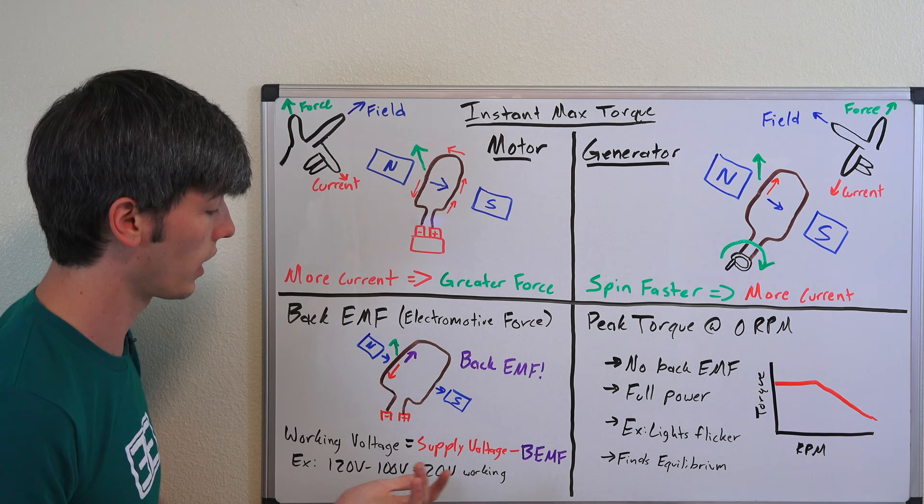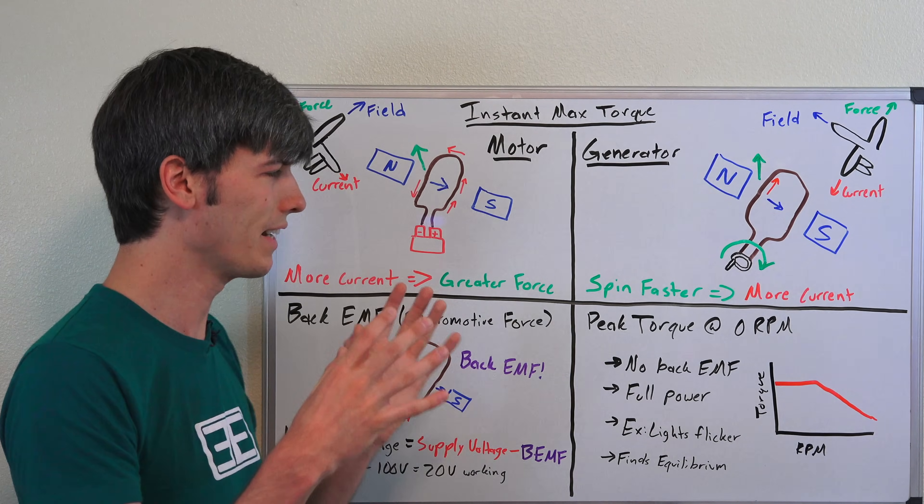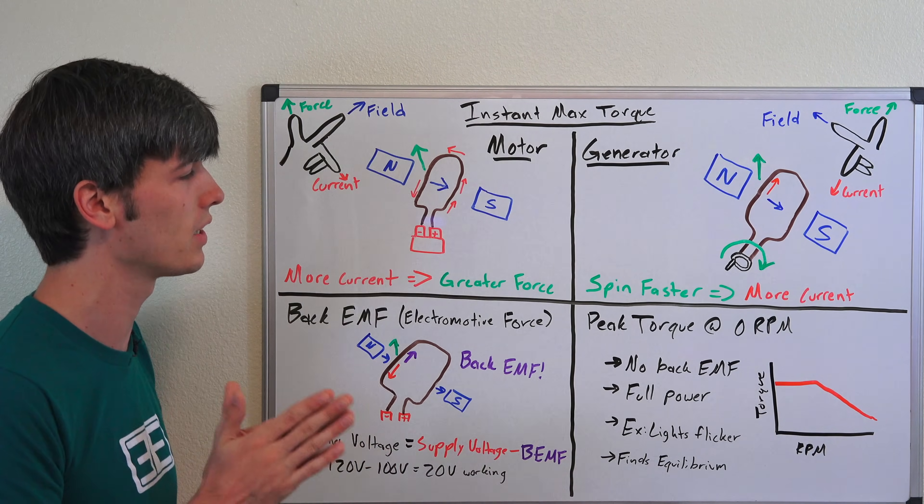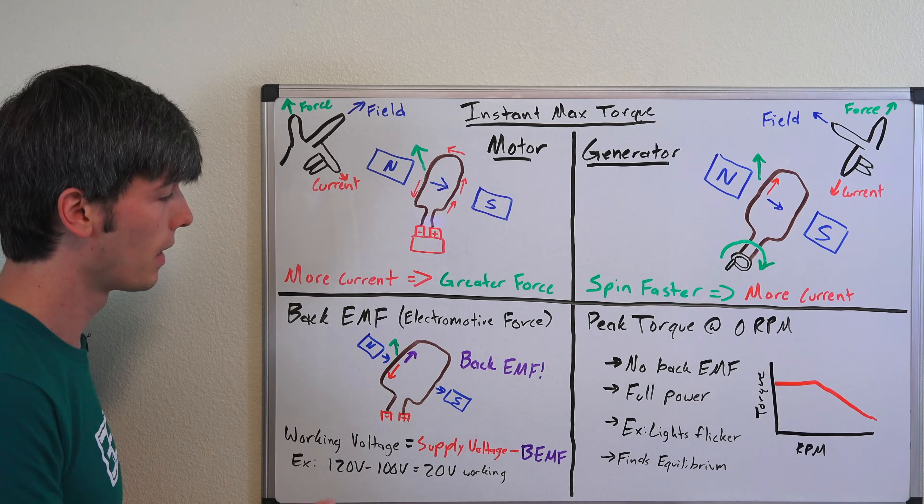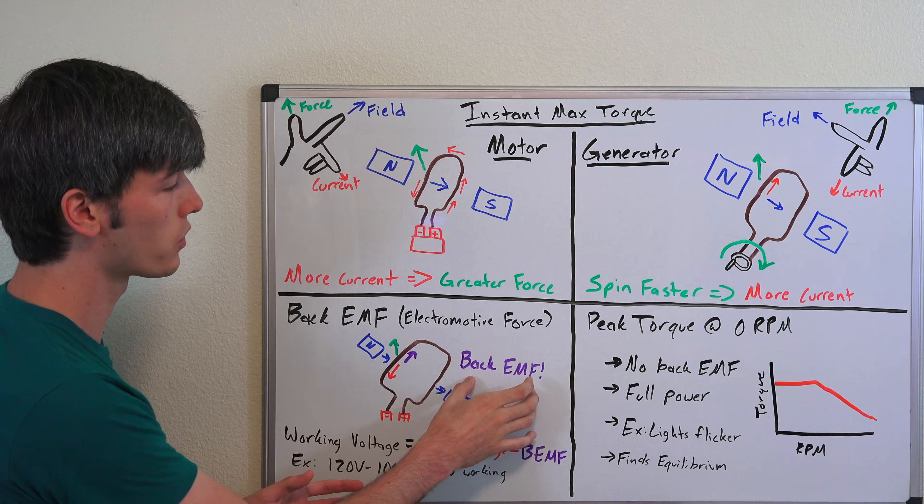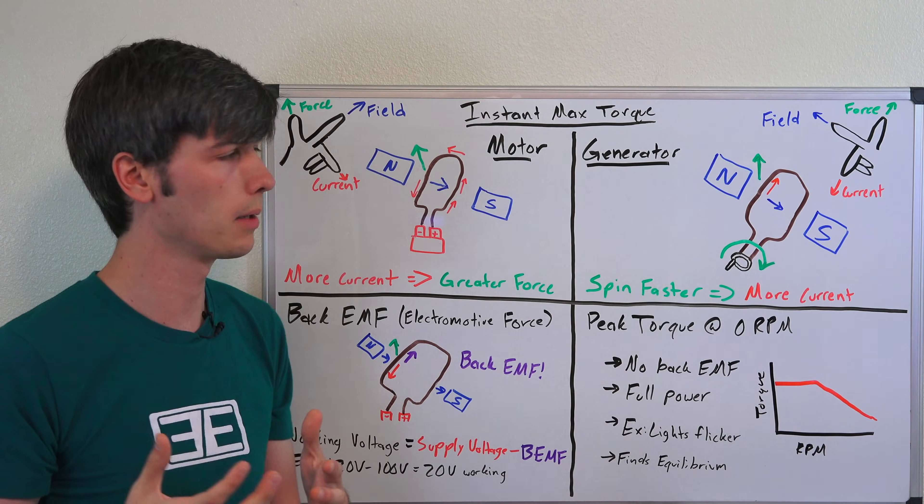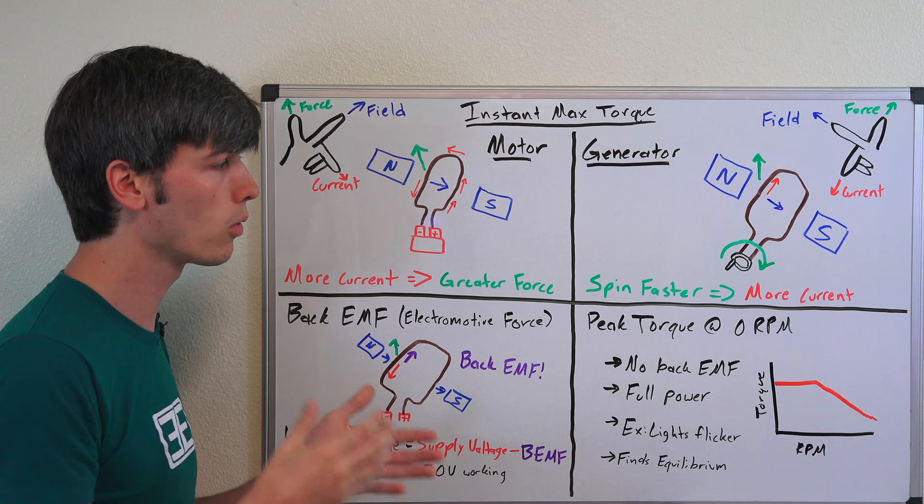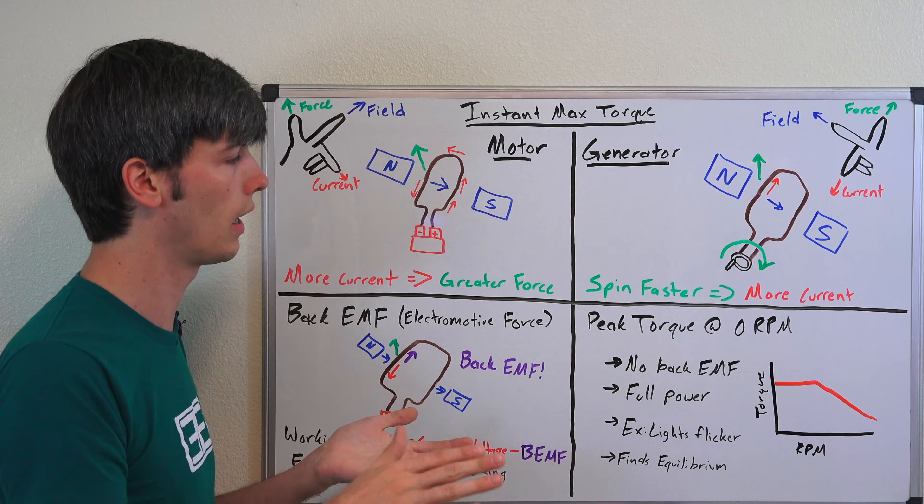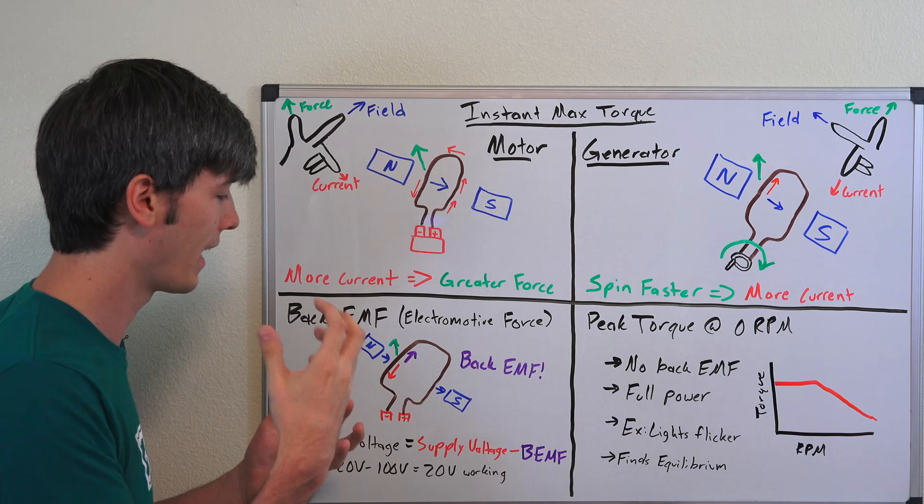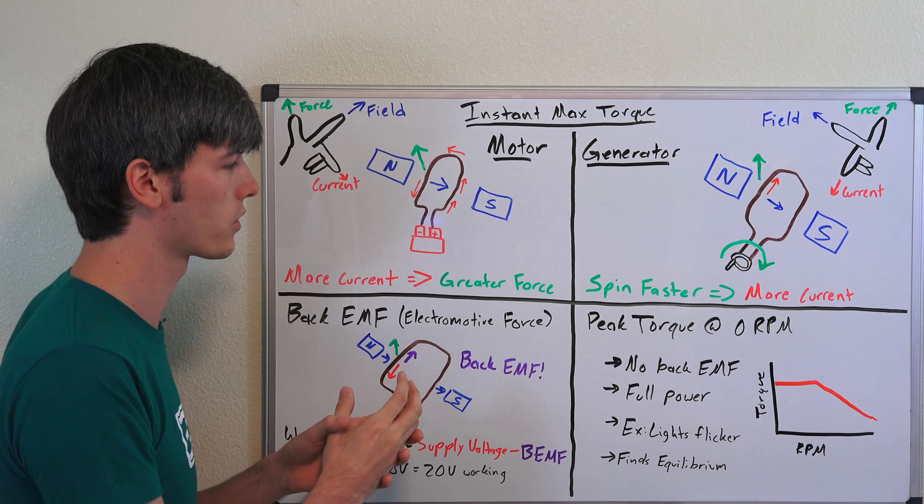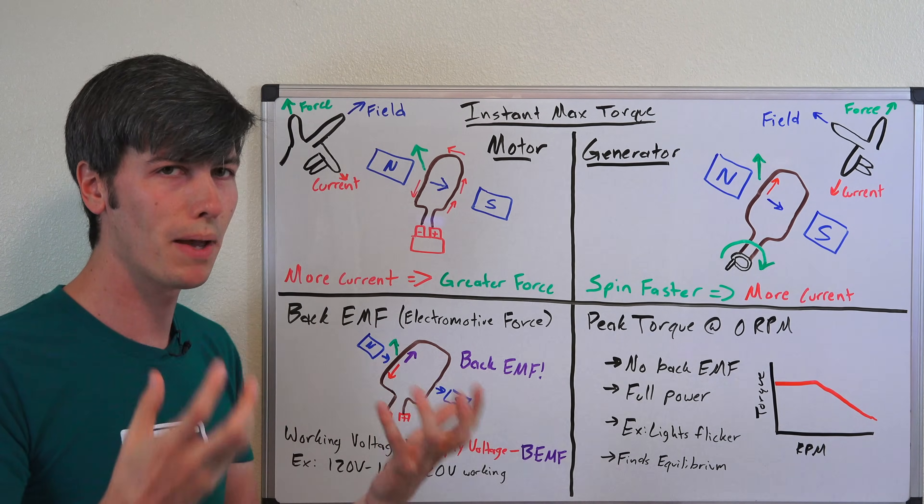Because back EMF is only occurring once this is actually rotating. So the faster you spin it up, the more back EMF you have. When it's not rotating at all you have no back EMF, and as a result all of the power that's going into it is creating torque.